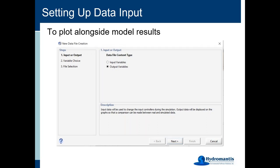Now let's talk about plotting data alongside the model results. This is not input — this is putting data into GPSX that is output data, and you just want to plot it alongside the simulation results. Essentially it's exactly the same process: you use the output variables box. When setting up a new file, you click on that same button, select output variables, and you'll get different options based on what graphs you have created. You just click off the ones you have data for and it'll make that same format for you, then you can paste in the data.